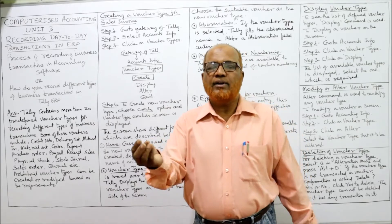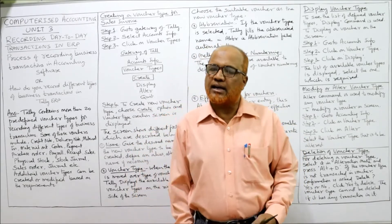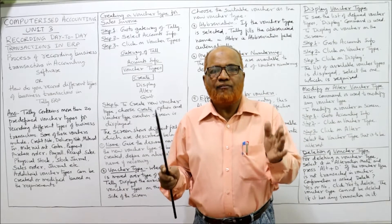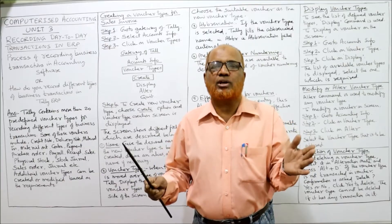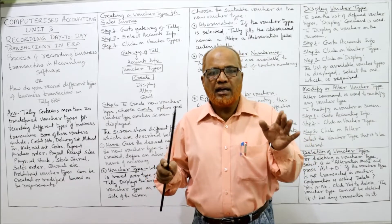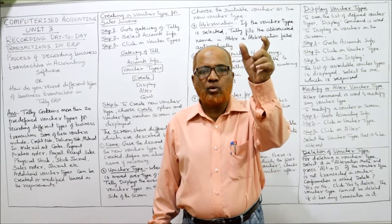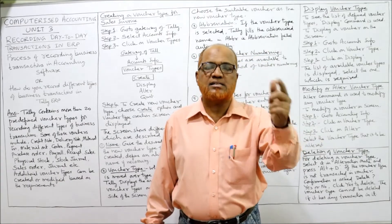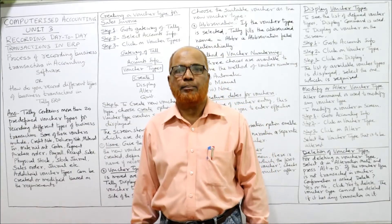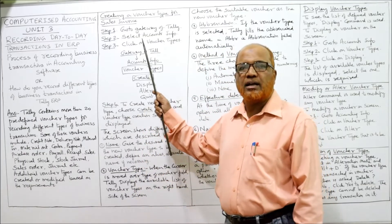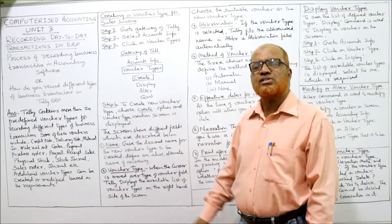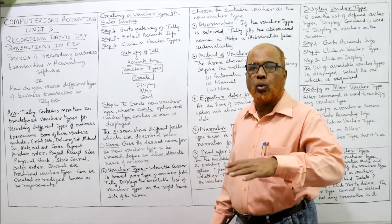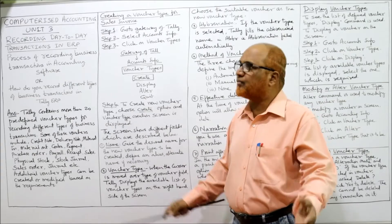We cannot directly enter transactions in the accounting package. In Tally, we first have to make a structure — a design. In that structure we create a voucher type, and after creating the voucher type we can enter transactions. The steps to create a voucher type are: Step 1 — go to the Gateway of Tally. Step 2 — select Accounts Info.